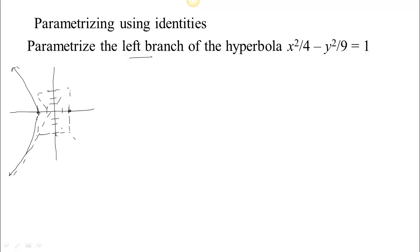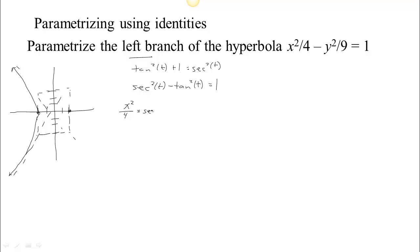One way to parameterize this is to use the identity: tangent squared t plus 1 equals secant squared t. You can get that by taking sine squared plus cosine squared equals 1 and dividing both sides by cosine squared. Rearranging gives secant squared t minus tangent squared t equals 1. By comparison, if we make x squared over 4 equal to secant squared and y squared over 9 equal to tangent squared, then x squared over 4 minus y squared over 9 equals 1.